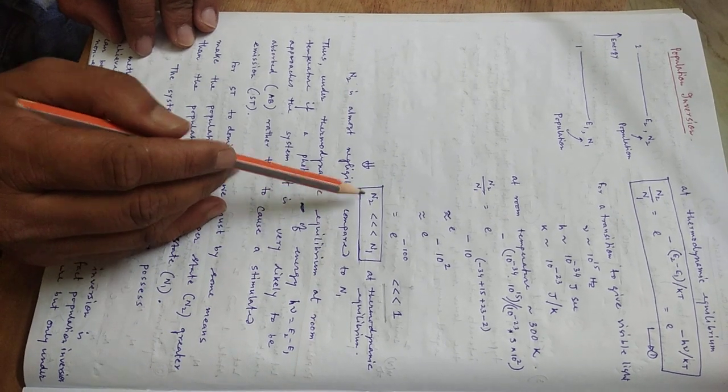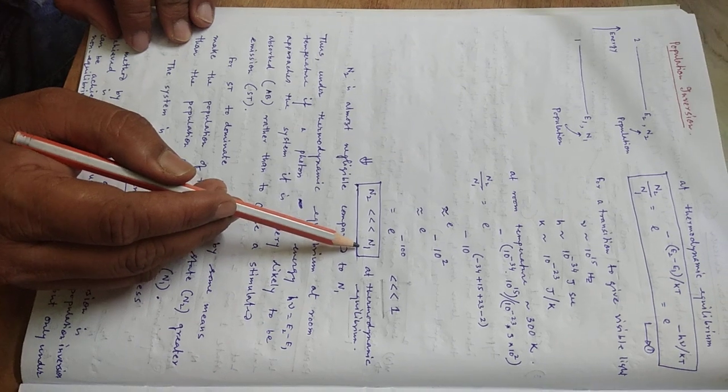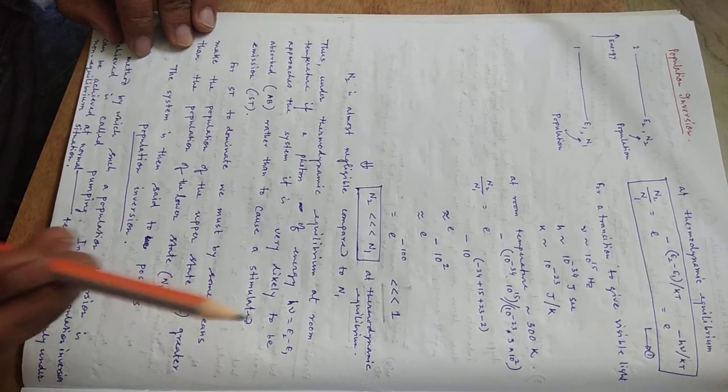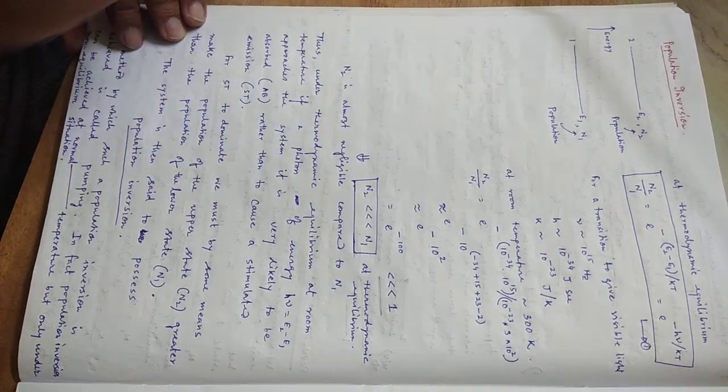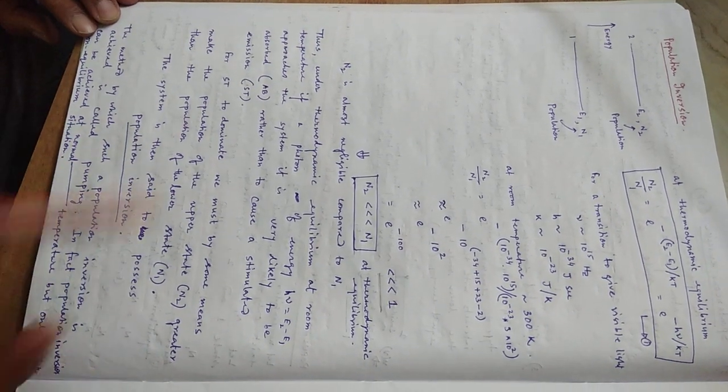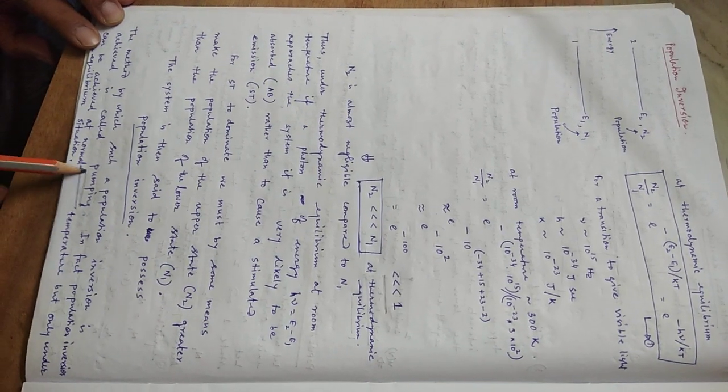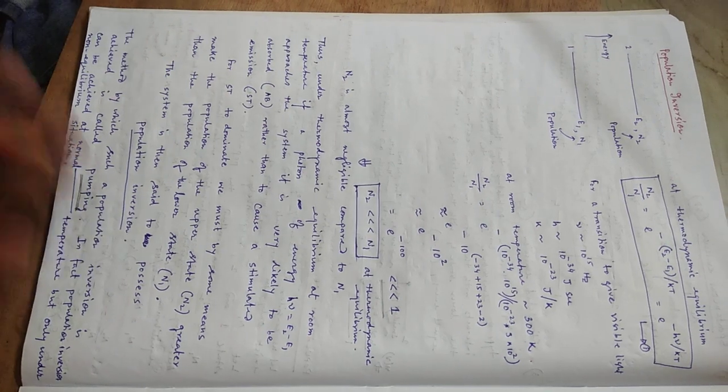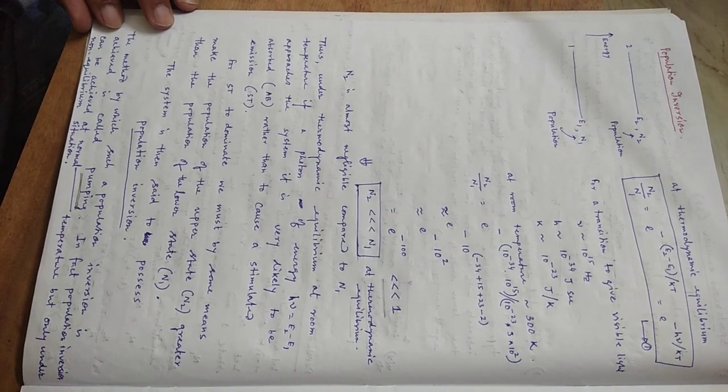That means we need to create a situation where N2 is much much larger than N1. So that situation is called population inversion. That means we have to invert the population of level 1 and level 2. And this is done by a method that is called pumping. So we have this N2 greater than N1 situation can be created using a method called pumping.